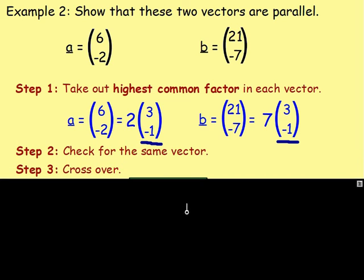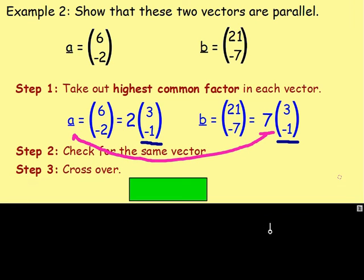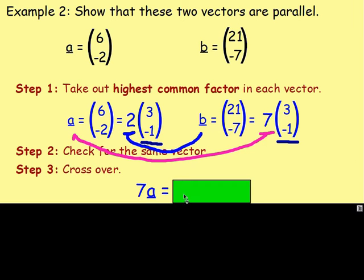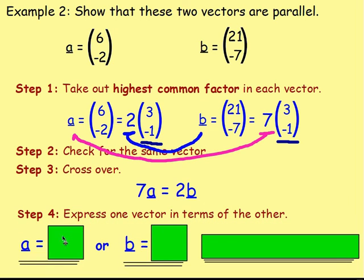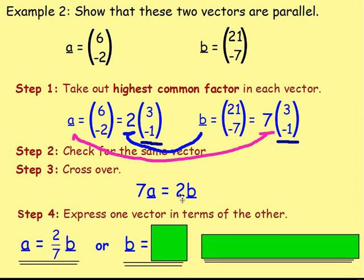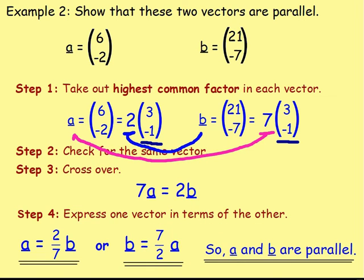We need to go on though and express one in terms of the other. To do that, we cross over. Take the number inside the bracket here — we've got a 7 — and that goes over with a. Going the other way, we've got a 2 here and that goes with vector b. So we can say that 7a equals 2b. Expressing one vector in terms of the other: a equals 2/7 b, or dividing both sides by 2, b equals 7/2 a. One vector is written as a multiple of the other, so we know that a and b are parallel.